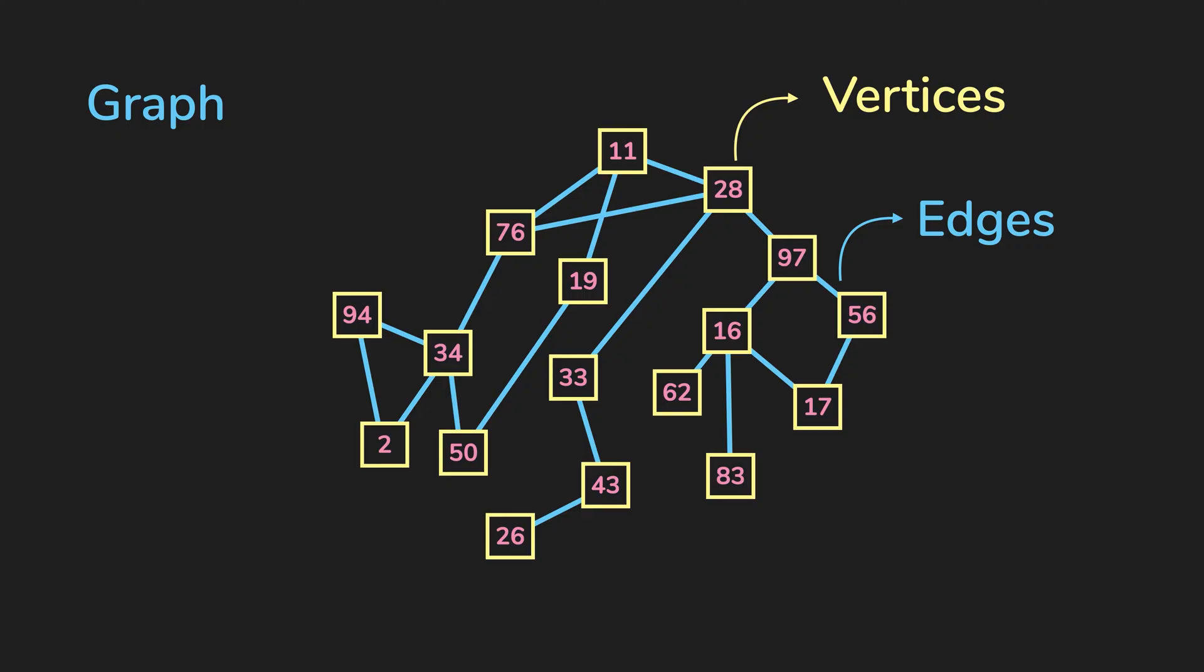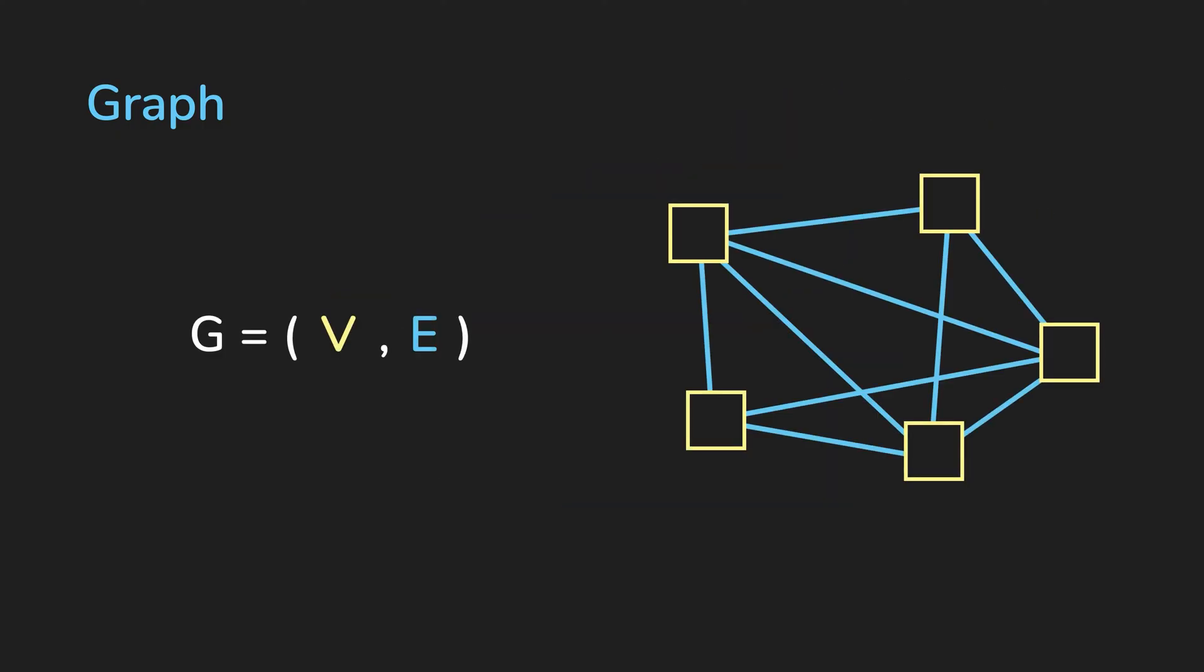Formally or mathematically, we define a graph like this. G is the graph, V is the set of vertices, and E is the set of edges.